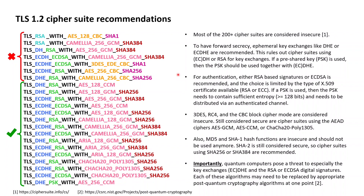If a pre-shared key is used, it's important to ensure that it contains enough entropy of at least 128 bits and that it was distributed over an otherwise authenticated channel. As no X.509 certificates are then involved, a separate mechanism needs to exist that can revoke a pre-shared key in case it would be assumed to be compromised.